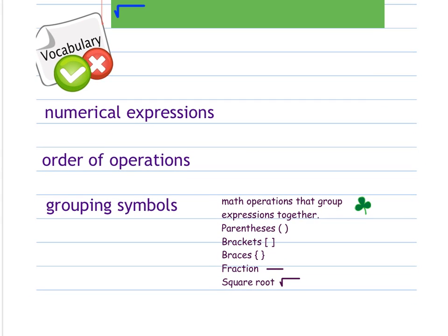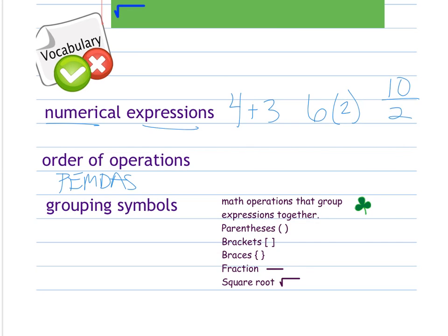There is a lot of vocabulary in this lesson. Numerical expressions are, for example, 4 plus 3, 6 times 2, 10 divided by 2 — anything that has numbers and operations. So a numerical expression is a number sentence where there are numbers and at least one operation. The order of operations — once you're learning PEMDAS — is the order in which we solve mathematical problems correctly. If you went out of order, you would not get the correct answer.